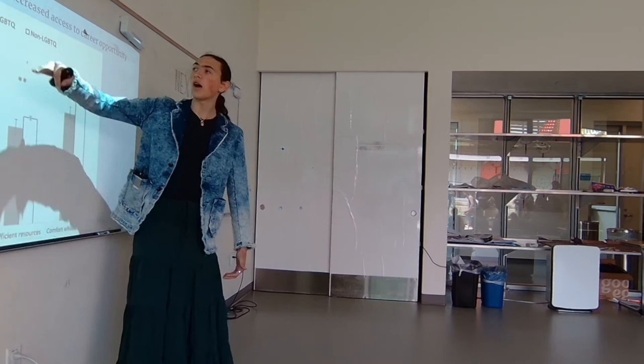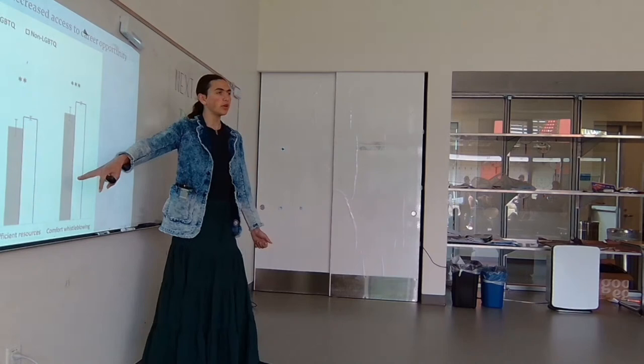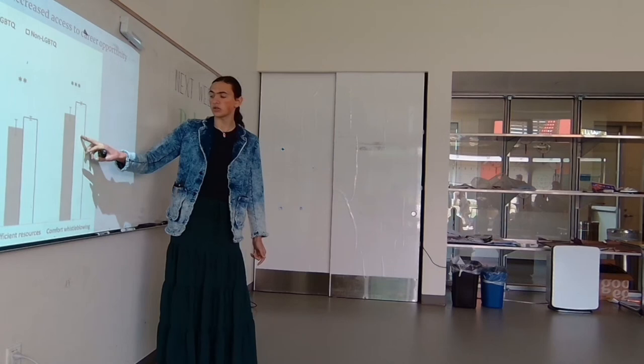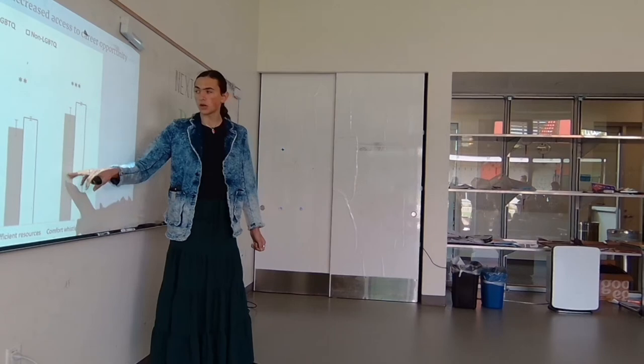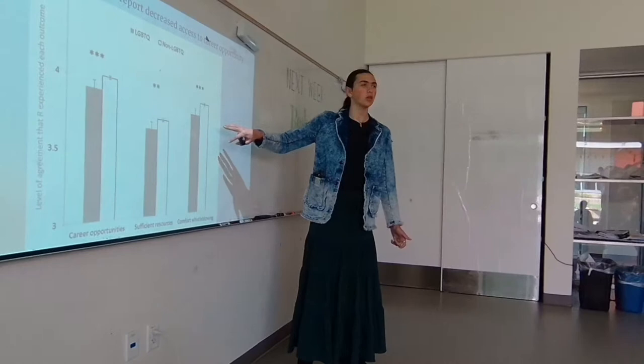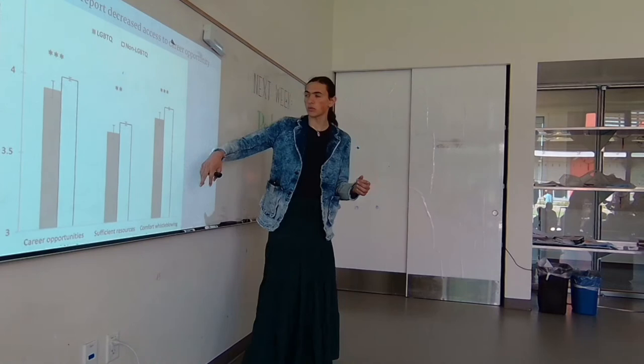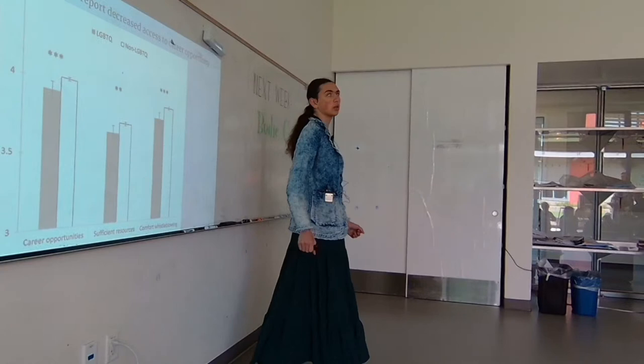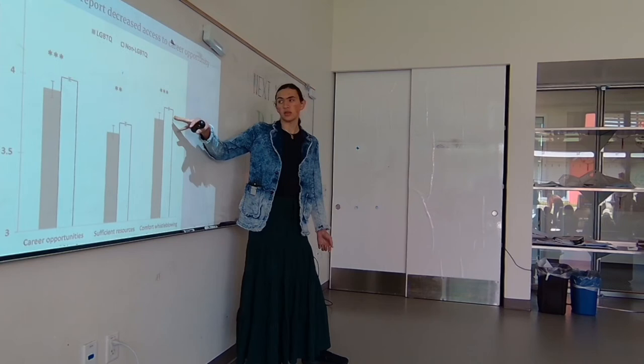And the three categories were for three different questions that they asked people. And the gray bar versus the white bar. The white bar is the average response of non-queer individuals. And the gray bar is the average response of queer individuals. And now you will notice that in each of these, the non-LGBT group, non-LGBTQ group, reported higher comfort whistleblowing, higher resources, and feeling like they had more career opportunities. Note that this is not by an incredible amount, but that it is a highly statistically significant margin, with them being outside of one another's margin of error.